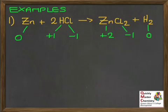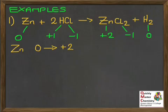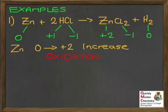Now we take each thing on the reactant side and see what's happened to it by the end of the reaction. If we take the zinc, on the left it's 0, and on the right it's plus 2. So we've gone from 0 to plus 2 — is that an increase or a decrease? It's an increase. And from what we said, an increase in oxidation state means oxidation. So we can say that during this reaction, the zinc is oxidised.